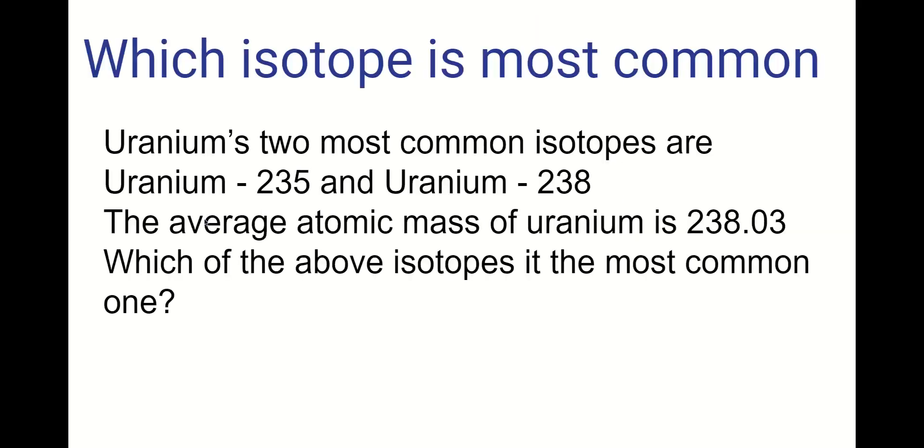So now let's apply this to some relative atomic masses that we find on the periodic table and use our knowledge to figure out which isotope is more common. So uranium has two common isotopes: uranium 235 and uranium 238. The average atomic mass of uranium is 238.03. Which isotope do you think is more common? Uranium 235 or uranium 238?